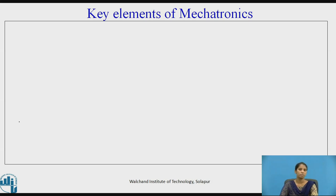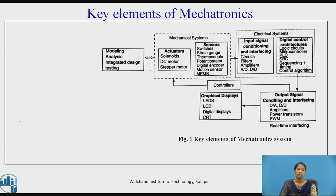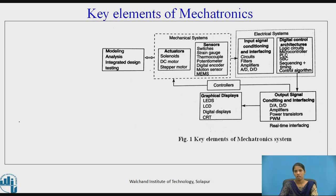Now let's see the key elements of mechatronics system. Figure 1 shows the key elements of mechatronics systems. This is the block diagram where it consists of modeling, analysis, integrated system design, and testing. It consists of various mechanical systems, electrical systems, graphical displays, and output signal conditioning and interfacing. The actuators and sensors constitute the mechanical systems, whereas input signal conditioning, interface, and digital control architecture constitute the electrical systems.